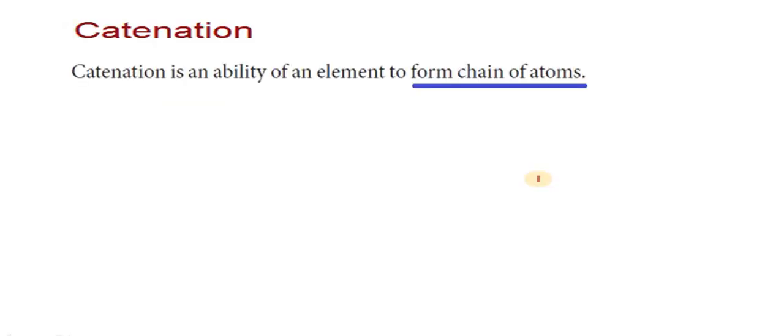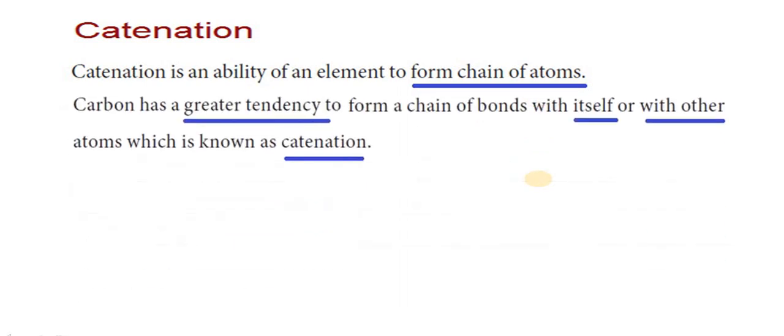Thank you. Catenation. What is catenation? Catenation is an ability of an element to form chain of atoms. This can be understood by using carbon. Why we have to use carbon to study catenation? Because carbon has the highest catenation property, even in the elements. Carbon has a greater tendency to form a chain of bonds with itself or with other atoms which is known as catenation.